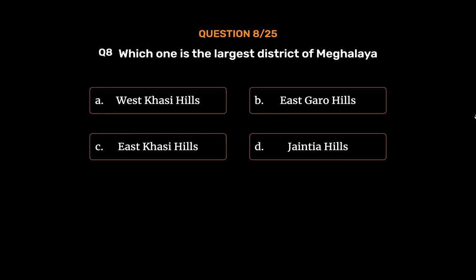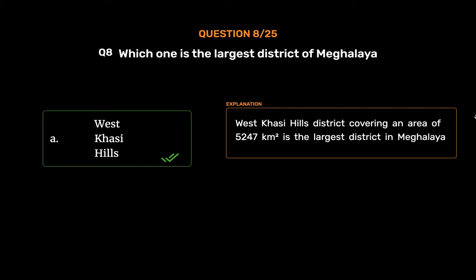The correct answer is Option A: West Khasi Hills. West Khasi Hills district, covering an area of 5,247 square kilometers, is the largest district in Meghalaya.